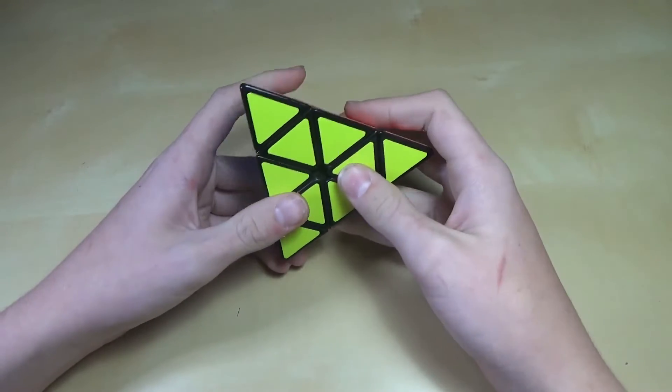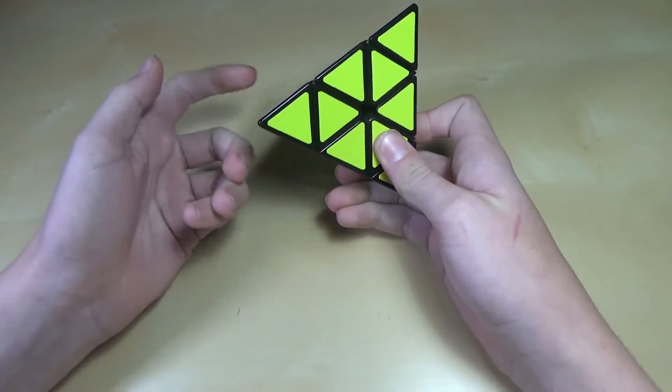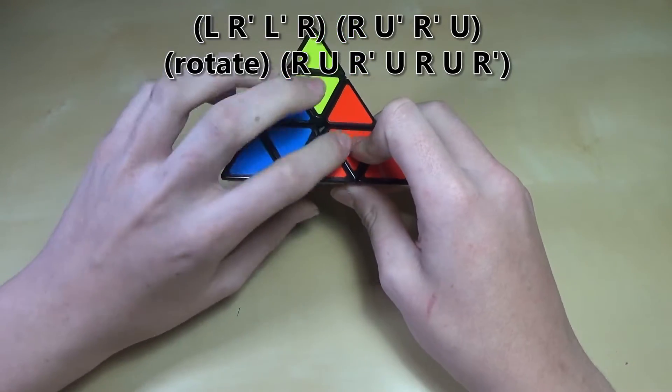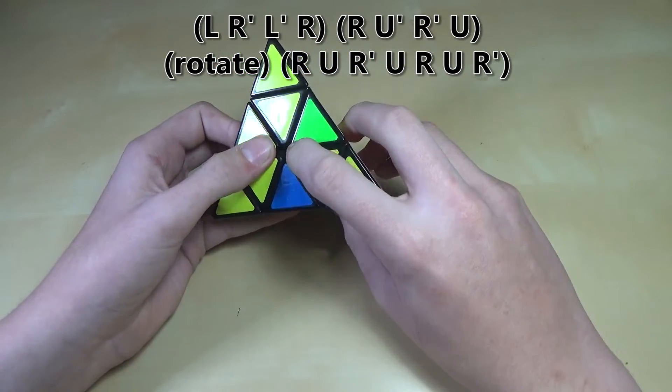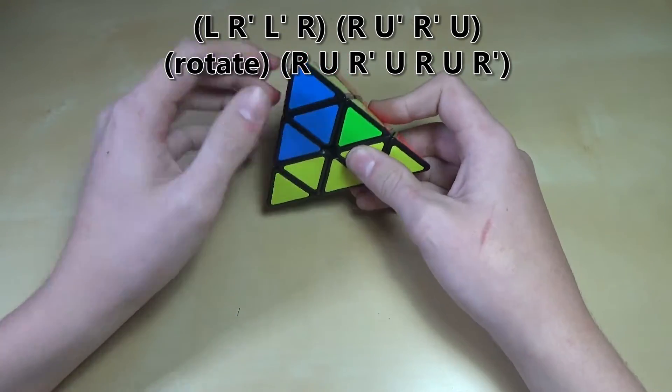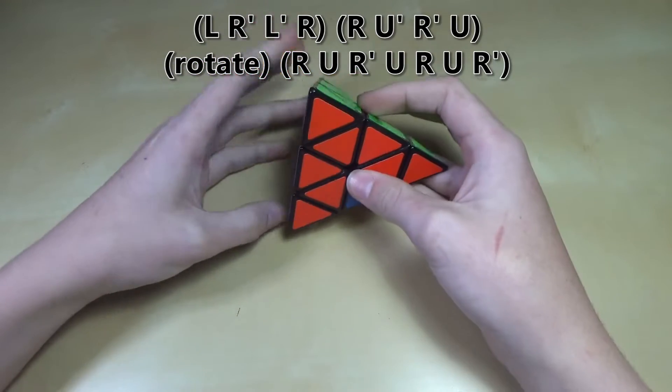These are just two algorithms that you might know from solving the Pyraminx. The first one, I'm going to start with the left. We're going to do L' R' or L R', L', R like that. And we're going to continue on doing R U', R', U just like that. And so you see we have these three right here.